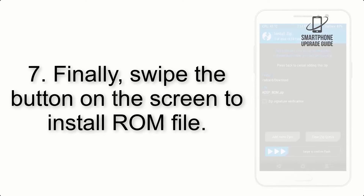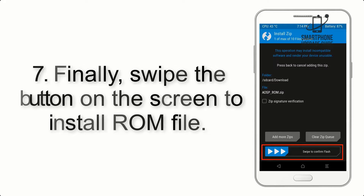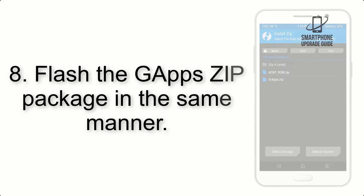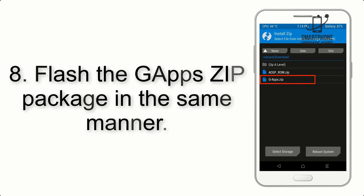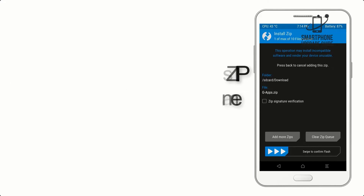Step 7: Finally, swipe the button on the screen to install the ROM file. Step 8: Flash the GApps ZIP package in the same manner.